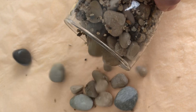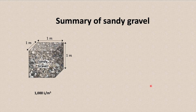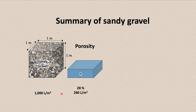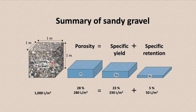And this is what specific retention looks like — note how these sand particles are stuck to the glass because they are wet. We can scale up the properties of our sandy gravel to a standard size of one cubic meter, which is one by one by one meters and has a volume of 1,000 liters. The porosity of our sandy gravel is 28 percent, so if we had a cubic meter of dry sandy gravel, we would require 280 liters to completely saturate it. If we let the water drain out by gravity, however, we would only be able to retrieve 230 liters per cubic meter because the specific yield is 23 percent. The remaining 50 liters remains stuck to the sand grains and gravel particles of our aquifer by specific retention.